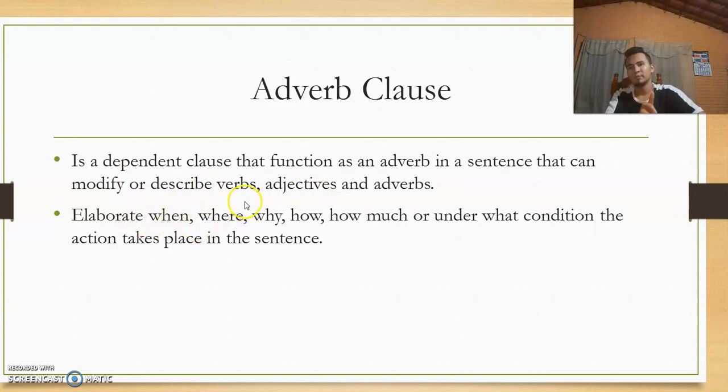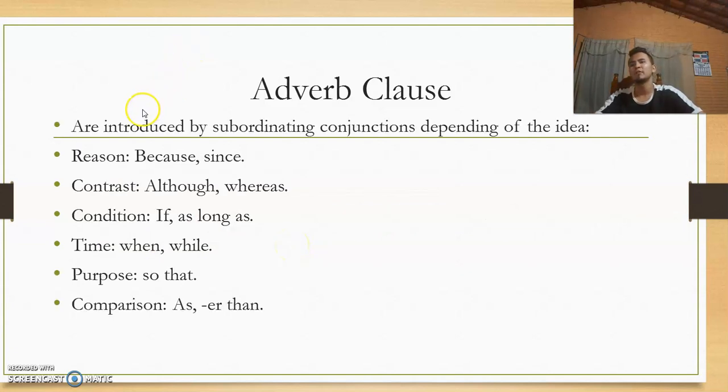It elaborates when, where, why, how, how much, or under what condition action takes place in a sentence. An adverb clause can be introduced by subordinate conjunction depending on the idea. If we want to give a reason, we introduce the adverb clause with the conjunction because or since. To make contrast: although. To express condition: if, as long as. To express time, for example: when.